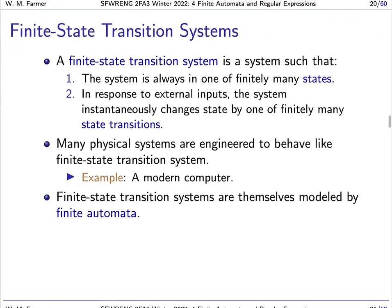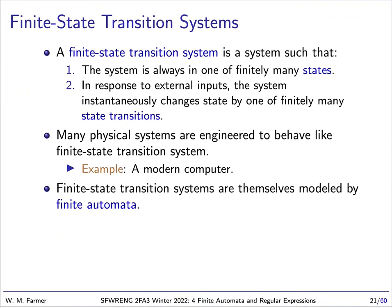Physical systems are often engineered to behave like finite state transition systems — designed so they are always in one of a finite number of states. The perfect example is a modern computer. Finite state transition systems can be modeled by finite automata, which is a very simple model for capturing the essence of a finite state transition system.